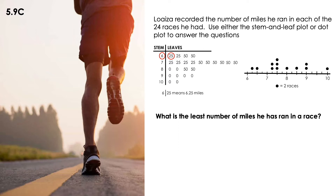The key is telling me that each of the dots represents 2 races. So I'm going to put the numbers on top so I know the value for each of the miles. I can see that the least amount of miles he ran is 6.25 with 2 races. So the answer is 6.25 miles.